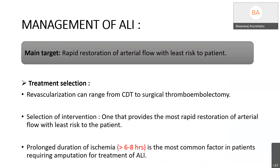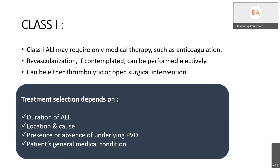Coming to the management of acute limb ischemia, the main target is rapid restoration of arterial flow with least risk to the patient. Revascularization procedures can range from catheter-directed thrombolysis to surgical thromboembolectomy. Prolonged ischemia of more than 6 to 8 hours is the most common factor in patients requiring amputation. Class 1 patients may require medical therapy such as anticoagulation, with revascularization performed electively. Treatment selection depends on duration of ischemia, location and cause of occlusion, presence of peripheral vascular disease, and the patient's overall medical condition.